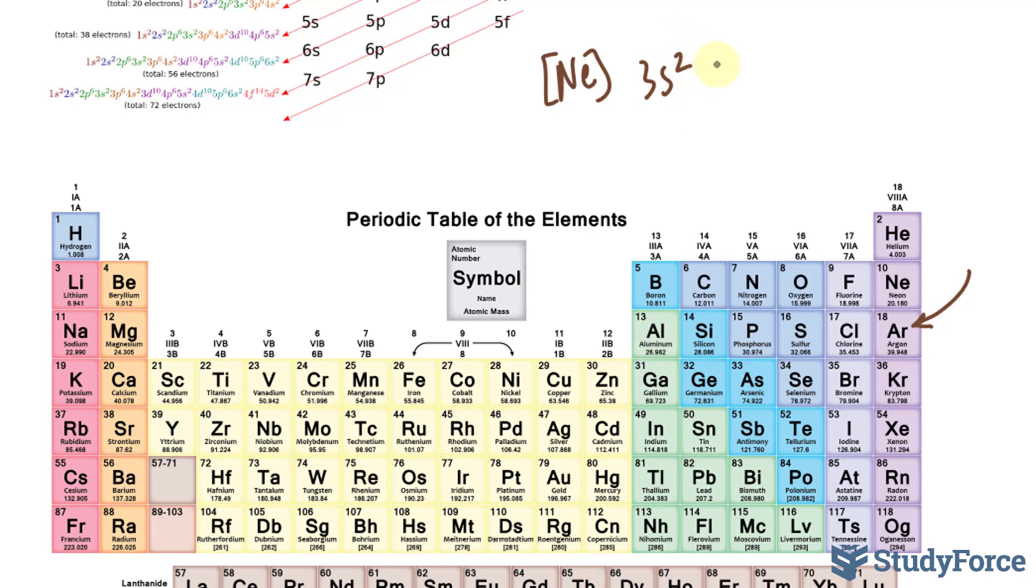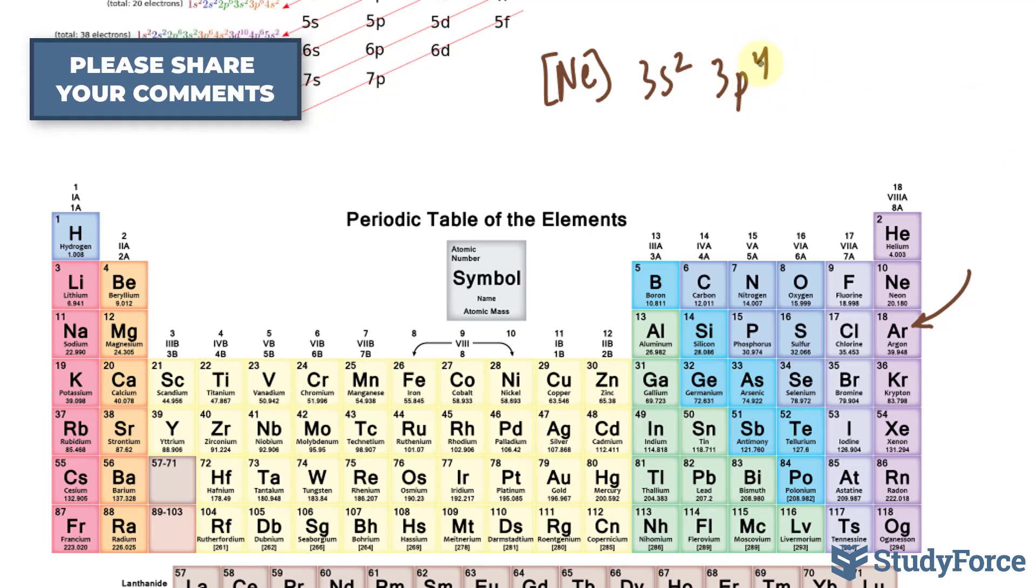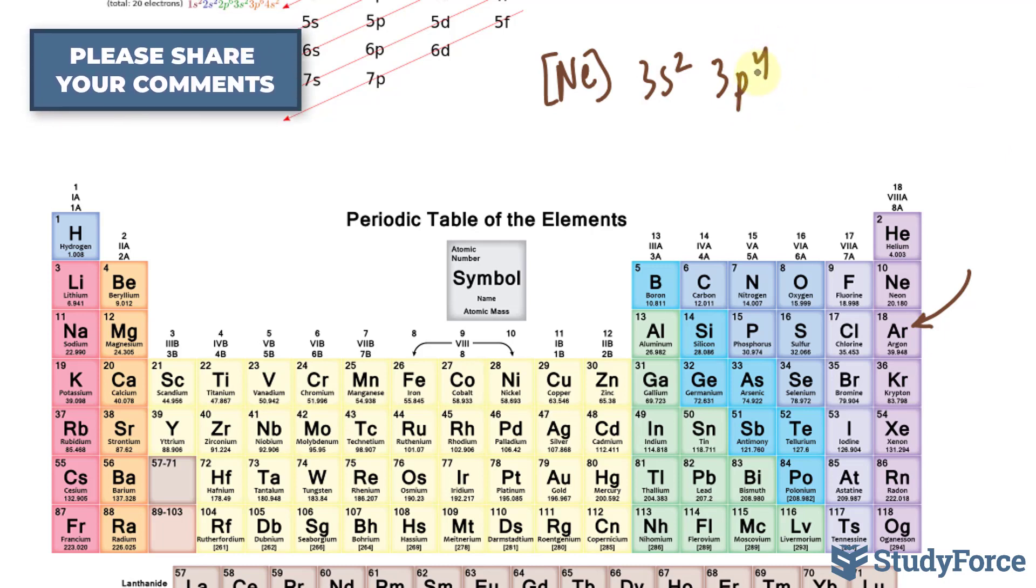And it's in the third row, so I'll write down 3s2. And sulfur normally would be, after 3s2, 3p4. But because it has gained two electrons, this 4 will become a 6.